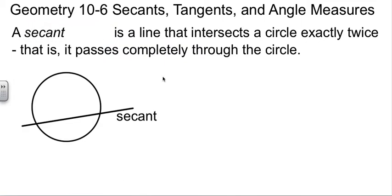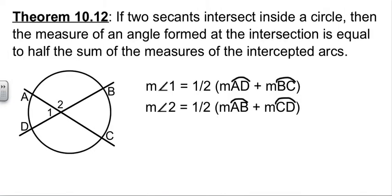A secant is a line that intersects a circle exactly twice. Remember, tangents only touched it once, secants touch it twice—they go all the way through the circle. So there's a secant.